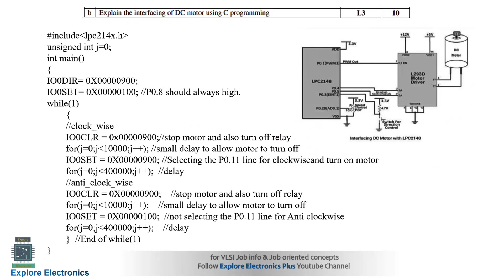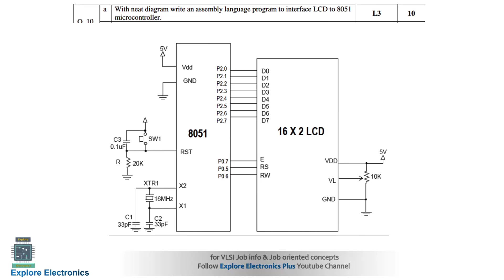The next question asks to explain the interfacing of a DC motor using C programming. The DC motor is connected through a motor driver to the microcontroller, and the port connections are shown. The C program for interfacing is provided with detailed comments included for understanding.